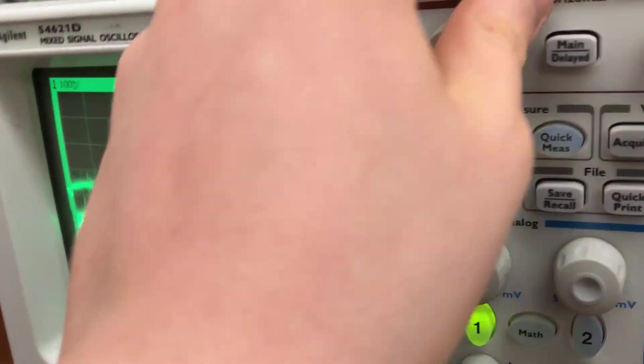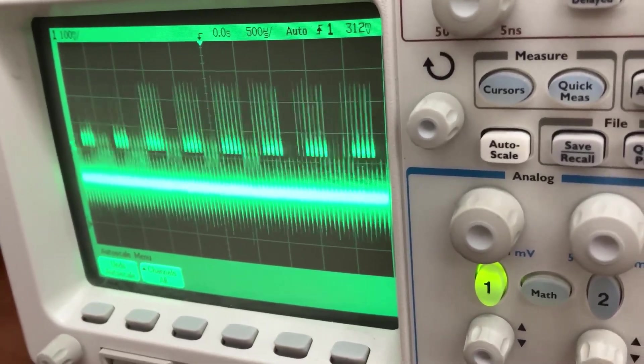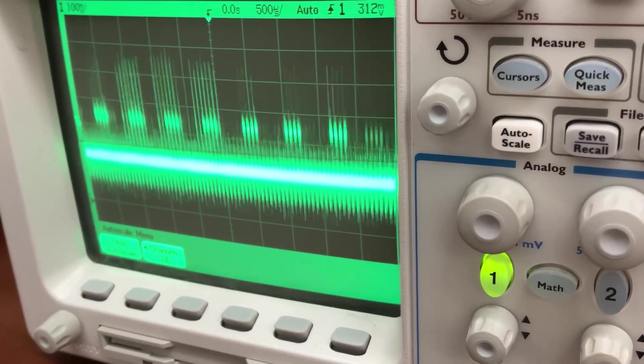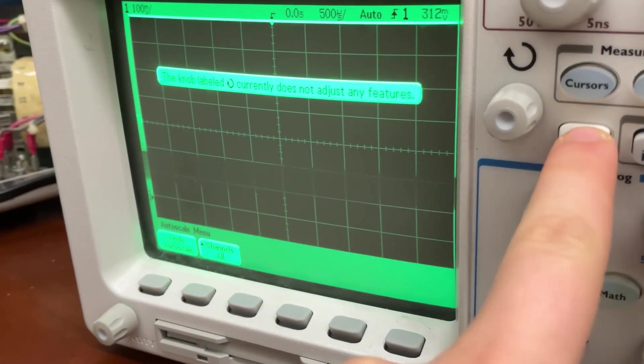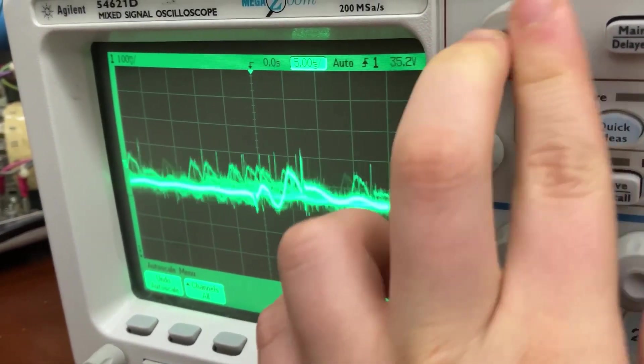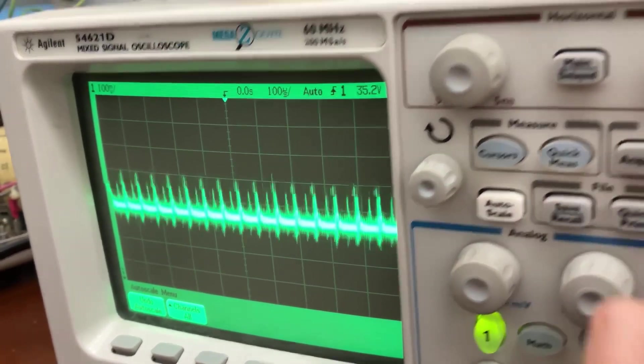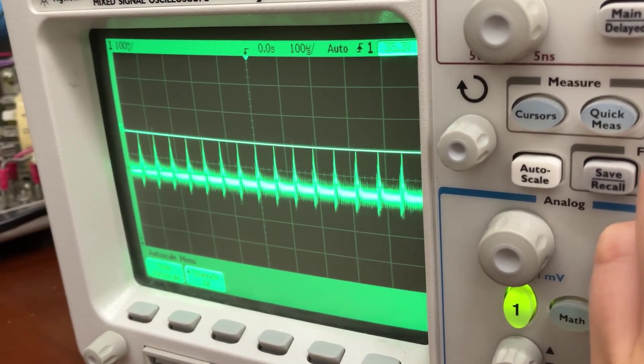This is now the signal going to the cathode. It is periodic. It doesn't have the up down sort of pattern that I saw from the Vector Graphic built-in program display that we get when we look at this terminal here.